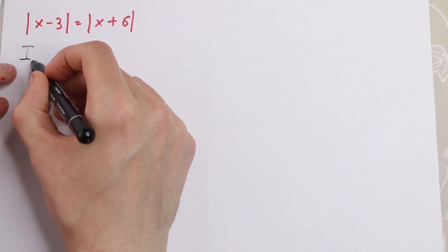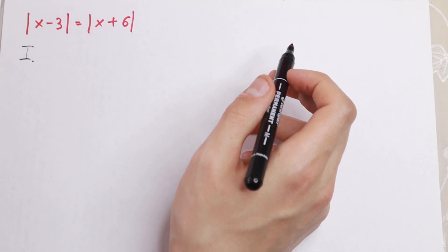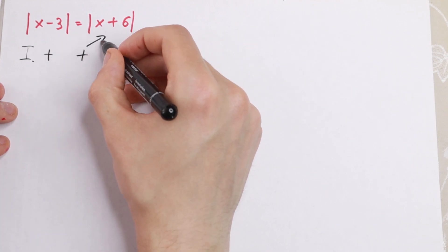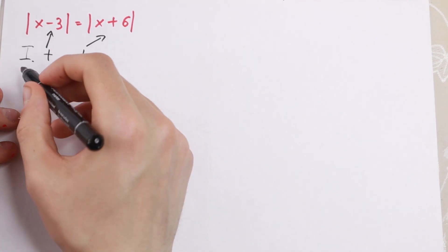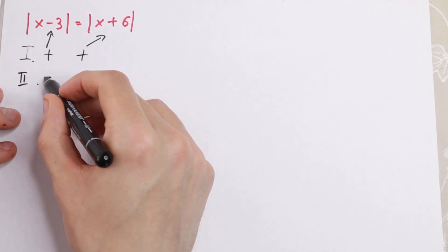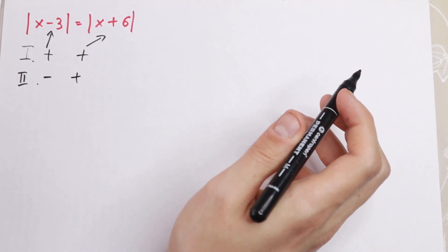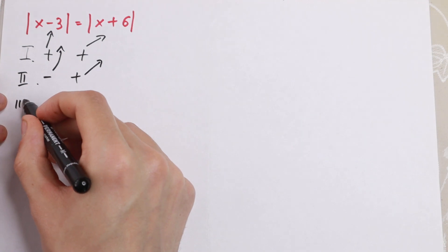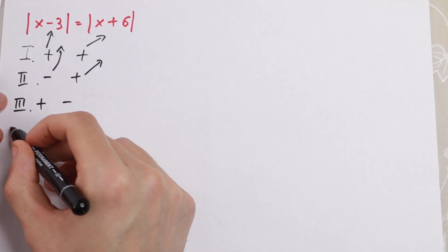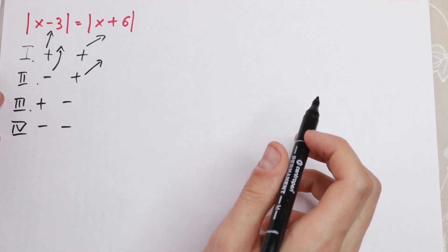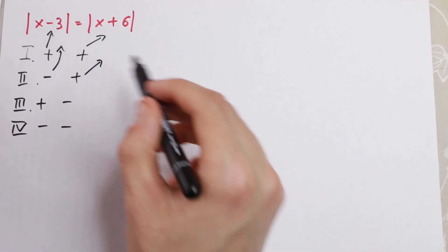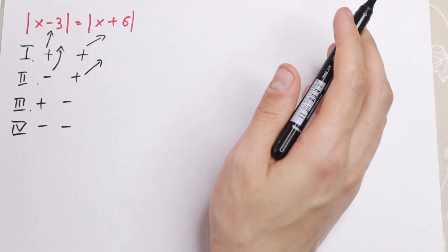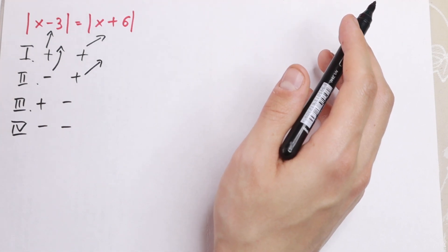Firstly, we don't know about the sign of this absolute value, so this can be plus and this can be plus — let's solve this case where both are positive. The second case: we don't know the sign, so this can be negative and this can be positive. We still have the combination where this is positive and this one is negative. Third case: this one can be positive and this can be negative, and the fourth where both can be negative. You just need to solve any combination with absolute value.